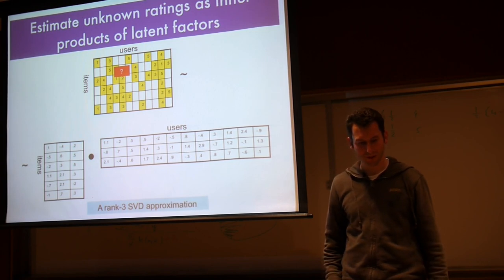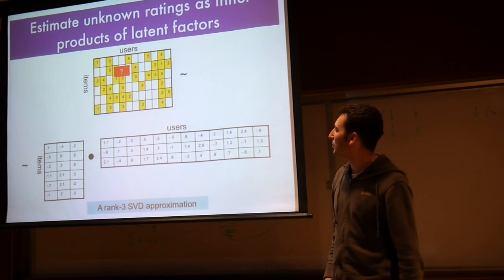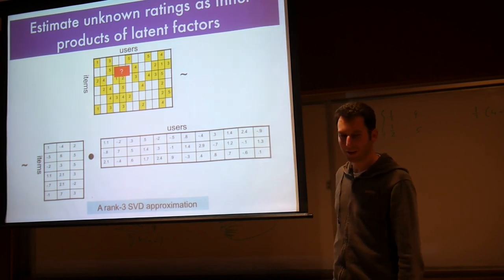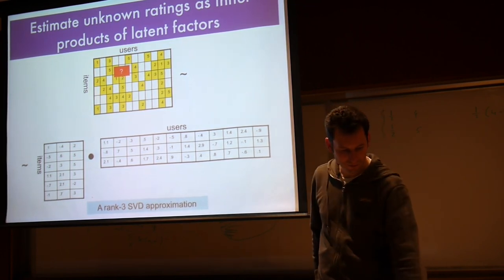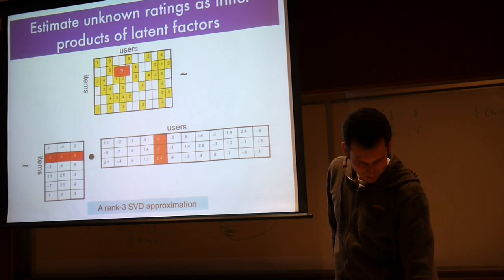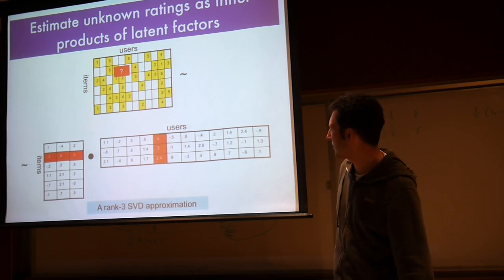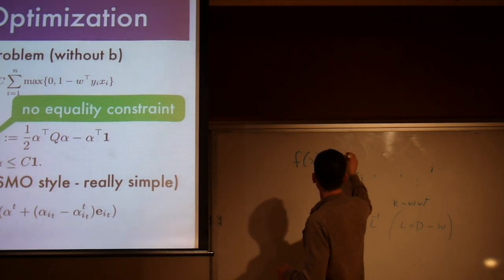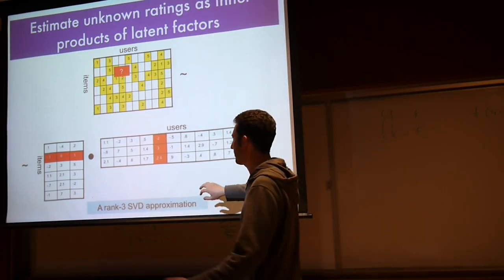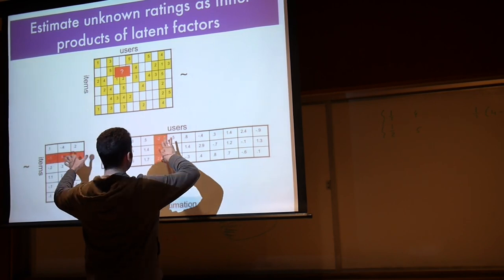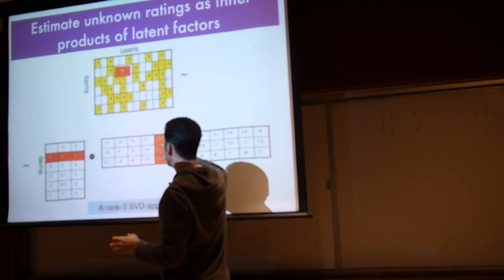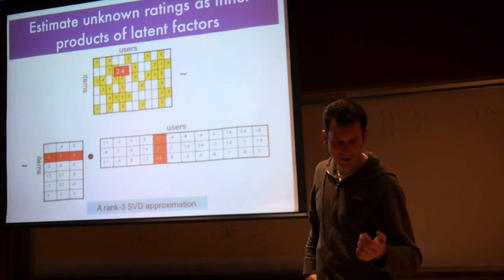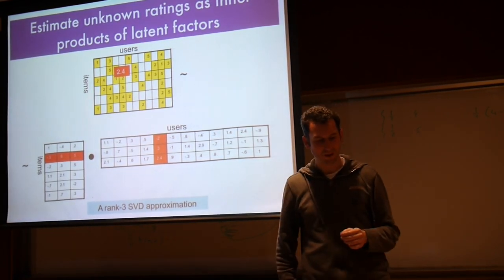Say we want to get this for maybe that particular user up here, user number 5. We want to find out how much he likes item number 2. We look it up in the corresponding rows and columns. We have those coefficients for user number 5, we have these. And we take the inner product.